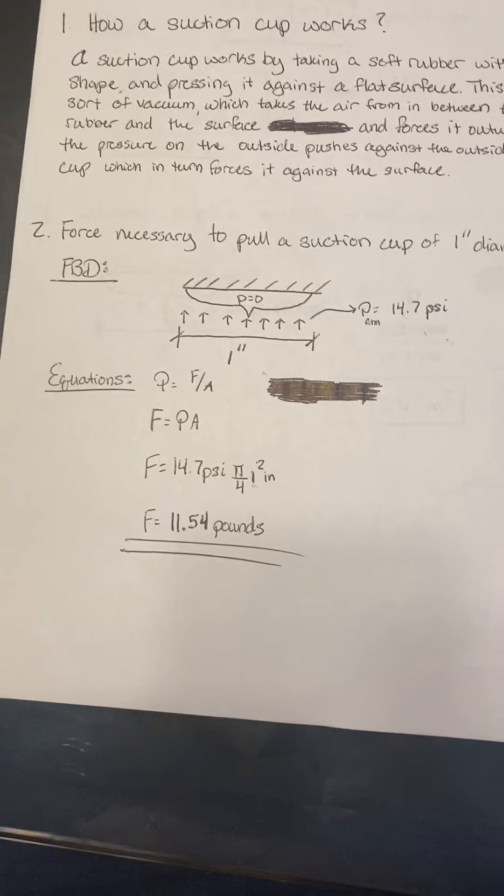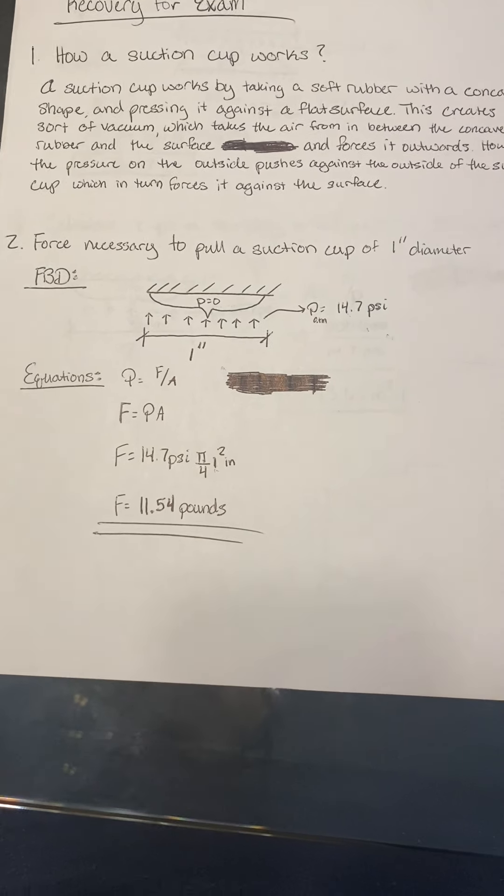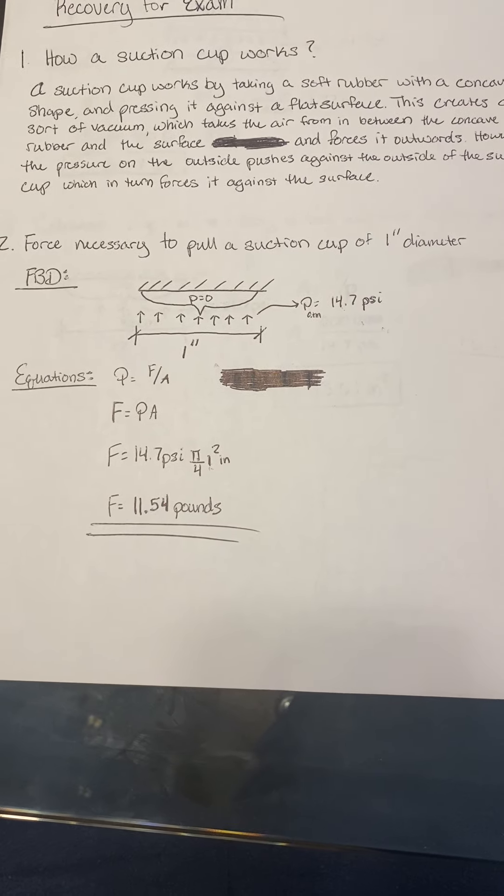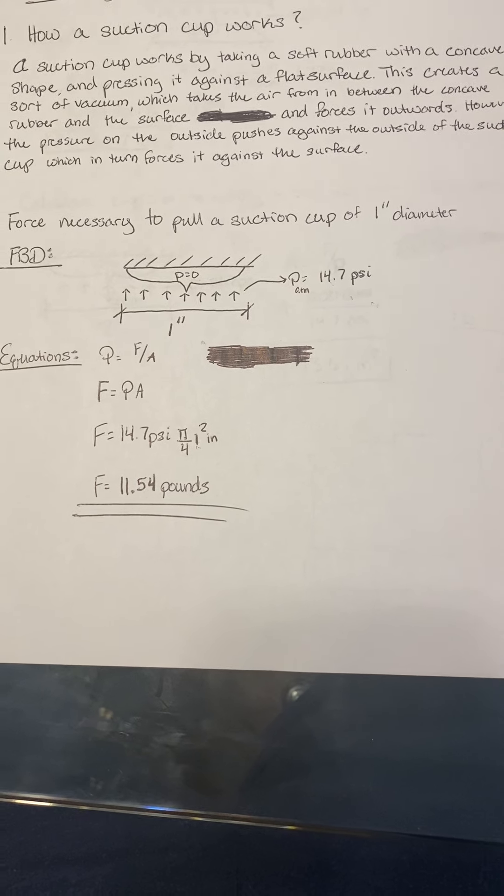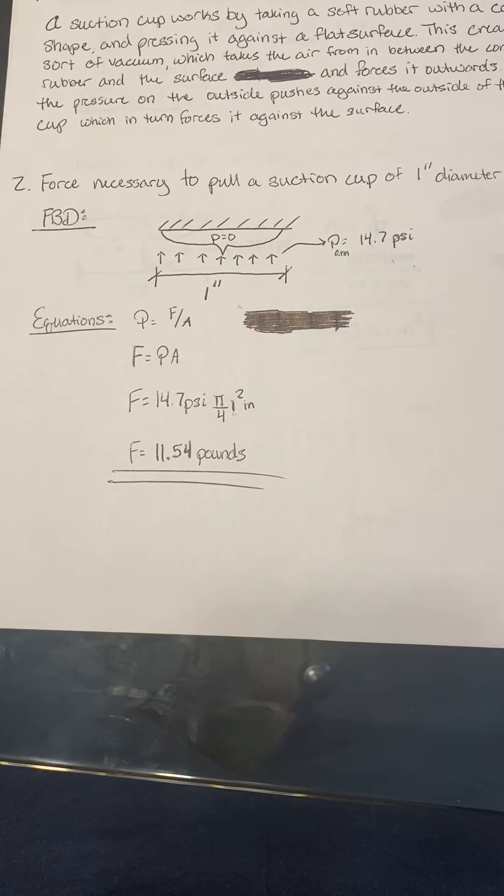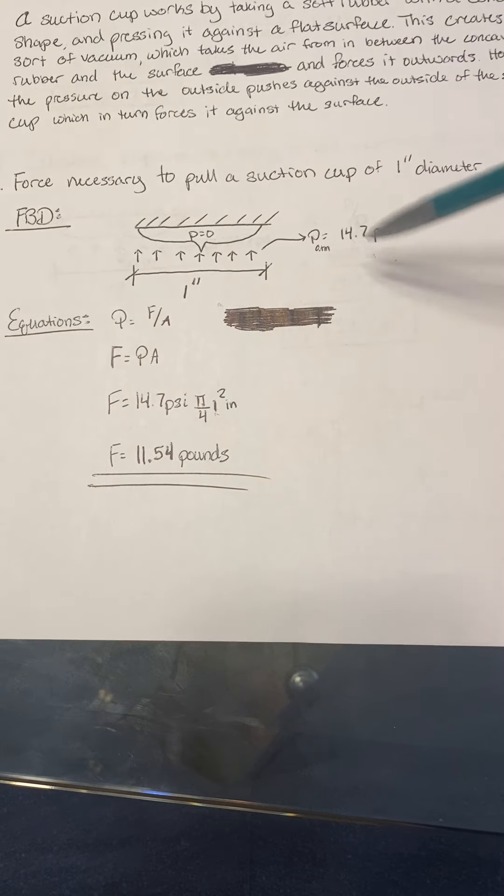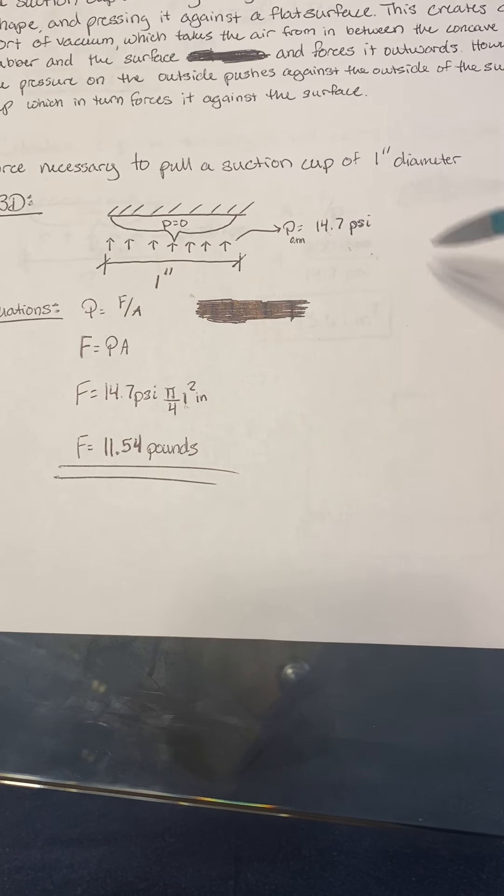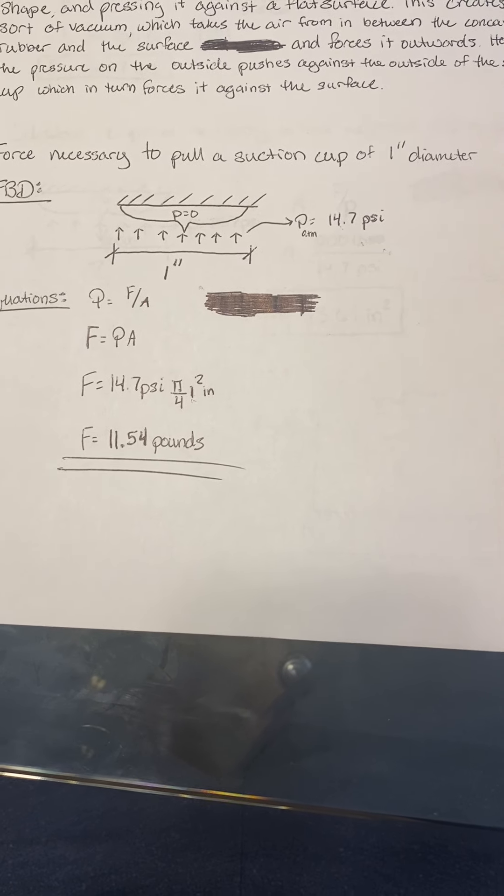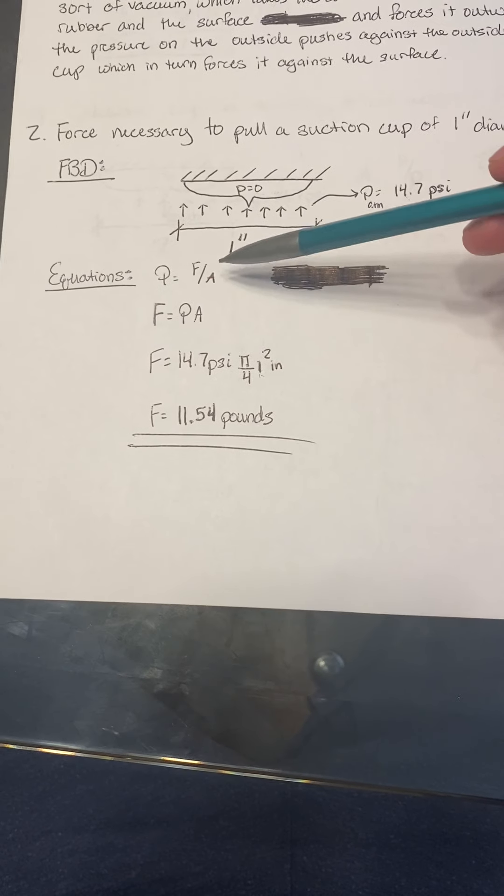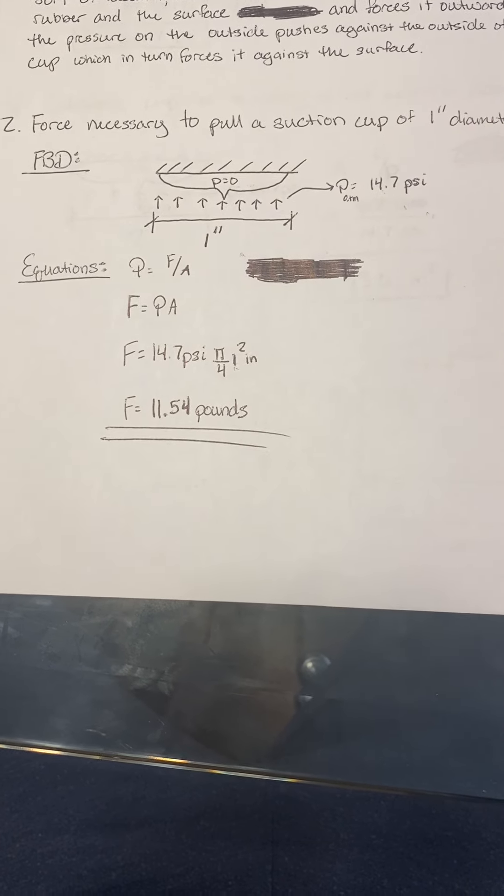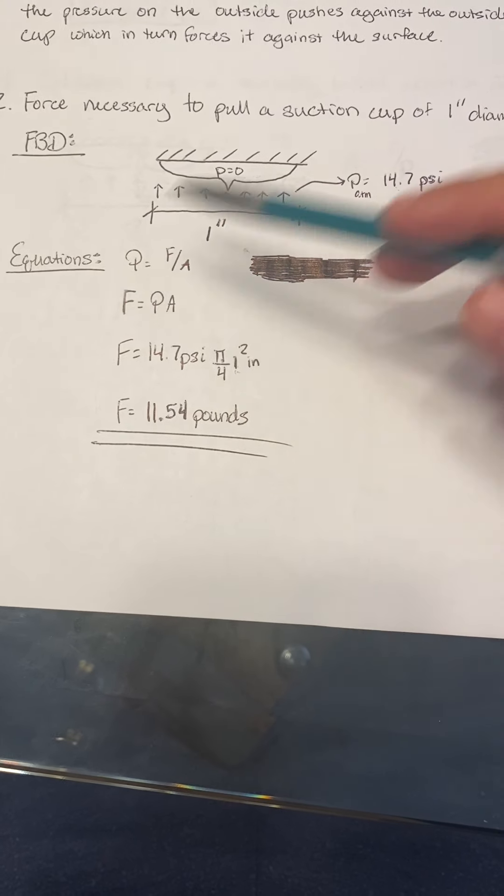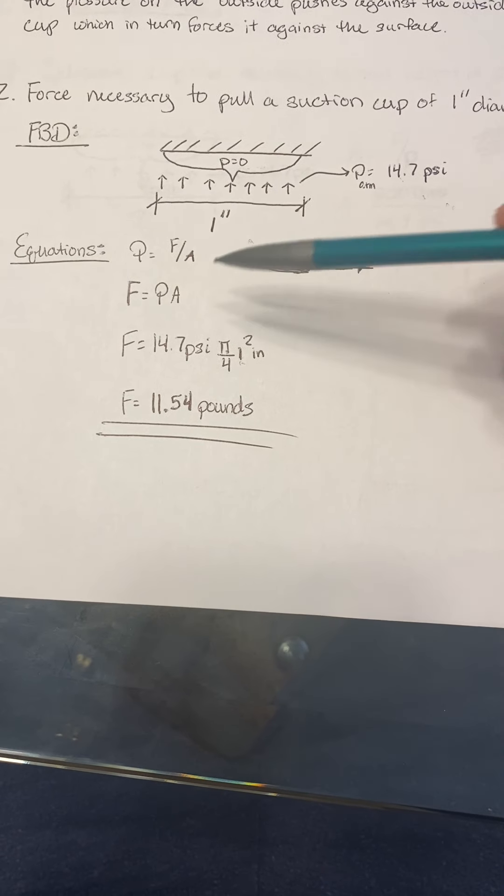Now for the second point, to calculate the force necessary to pull a suction cup of one inch diameter, right here you have my free body diagram: an inch of diameter and an outside pressure of 14.7 psi. The pressure inside is obviously zero. The formula is pressure equals force over area, so force equals pressure times area.